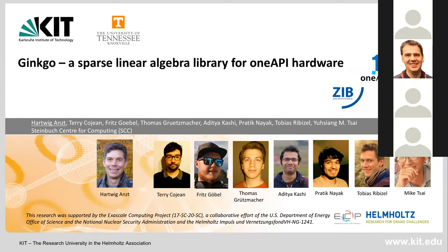What I'm going to show today is a case study where we use the OneAPI ecosystem to prepare Ginkgo, which is a sparse numerical library, for Intel GPUs. We are part of the US exascale computing project, and there is a plan to have an Intel GPU inside the Aurora supercomputer, which is supposed to be the first exascale system inside the US. There is strong interest in having numerics and libraries ready for this exascale supercomputer, which is why we look into porting Ginkgo to Intel GPUs via the OneAPI ecosystem.